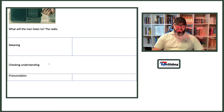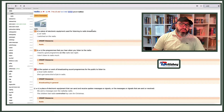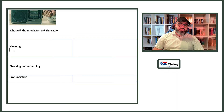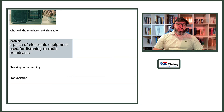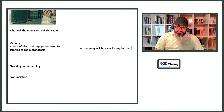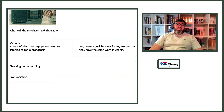For meaning of 'radio,' I'll use a dictionary. The Cambridge definition: 'a piece of electronic equipment used for listening to radio broadcasts.' For anticipated meaning problems: there won't be any, because Arabic-speaking students have the same word in their first language, so meaning will be clear.